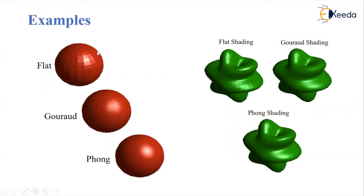These are examples of the three different types of polygon rendering methods. This one is flat shading. Then this one is the more advanced Gouraud shading, introduced by the Gouraud scientist. And then the next one is Phong shading, which gives more accurate results. So in this way we have seen these different techniques for polygon rendering.